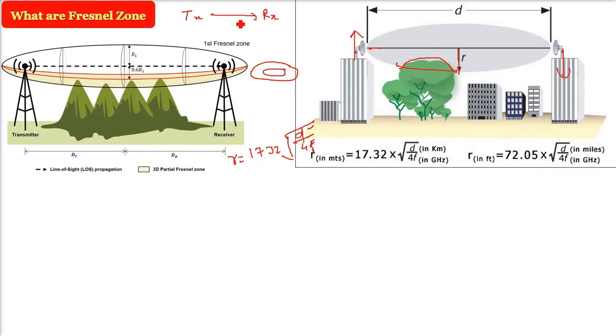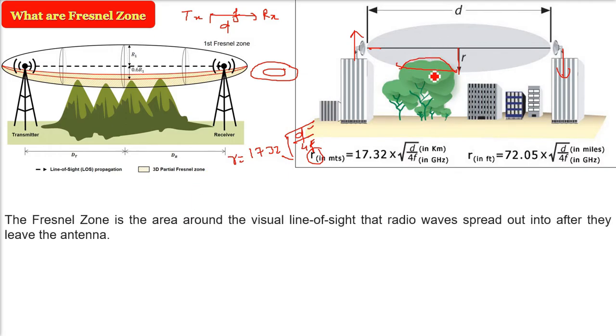So D is the distance between transmitter and receiver. F is the frequency on which you are working and this is in gigahertz. So you get the radius of the Fresnel zone. Let me tell you, it is not a circle but still the extent from the central line is called r.